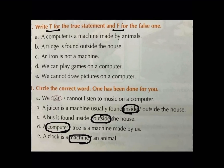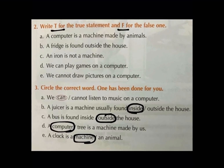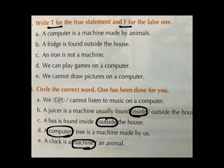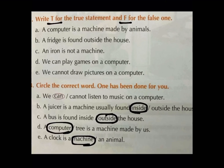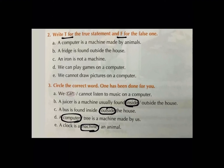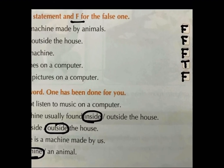Let us read the next statement: An iron is not a machine. That is not a machine? Electricity phe chalti hai woh. Kya woh machine nahi hai? That is a machine. So, yeh statement bhi kia hua? False. We will write F for false.